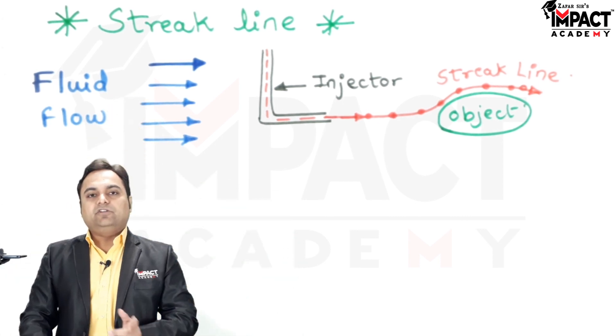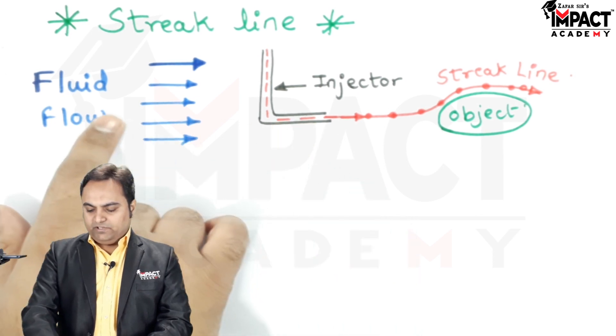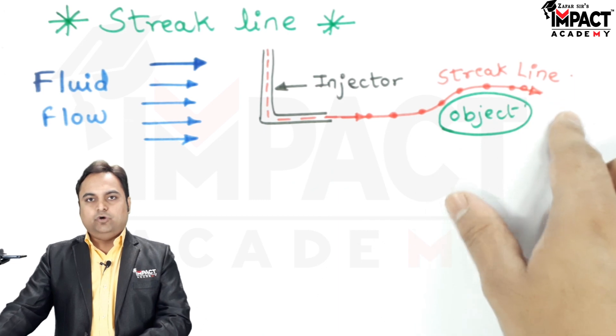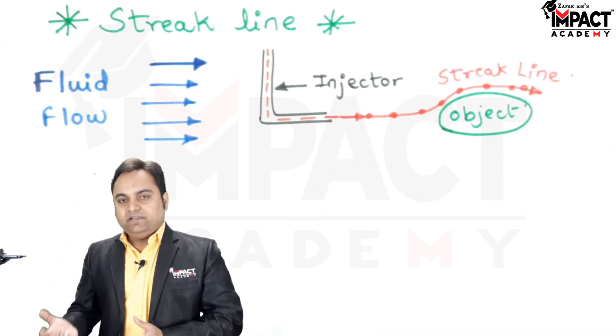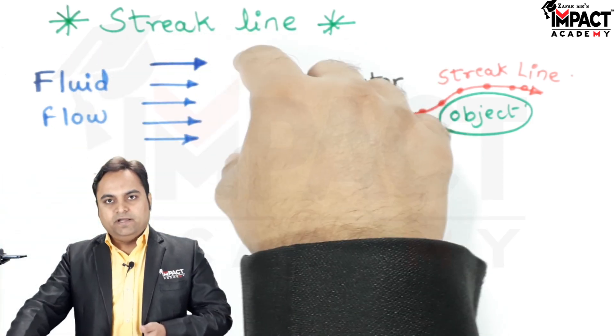at that time we are using smoke in the injector so that along with the fluid, along with the air, the smoke covers the object and we are getting the profile of flow. And if it is a water tunnel, that is a tunnel which is using water as the fluid,